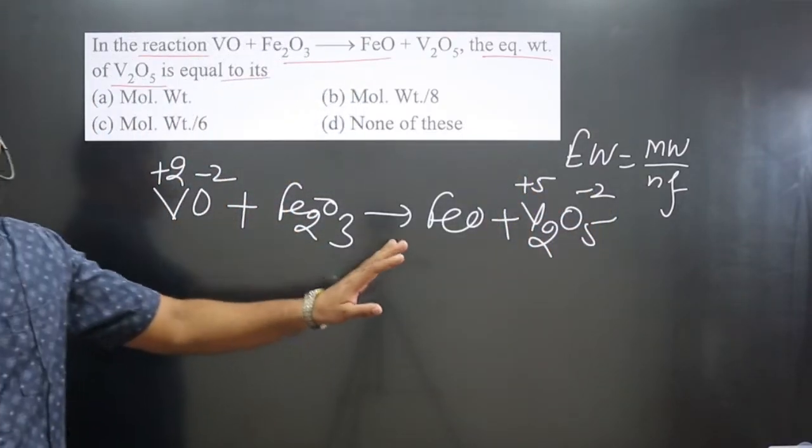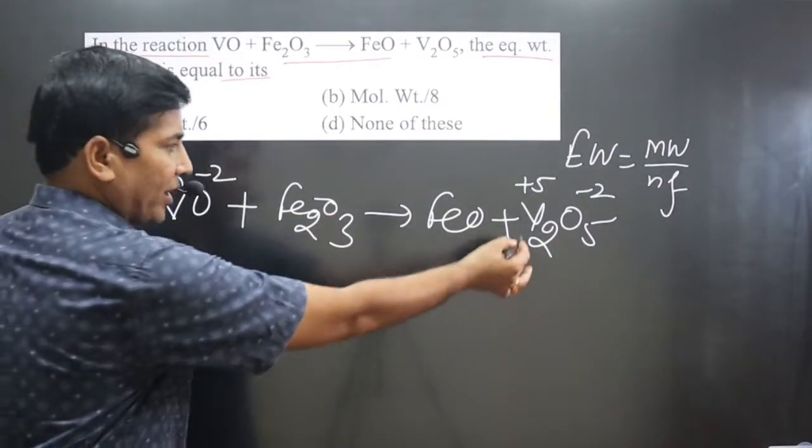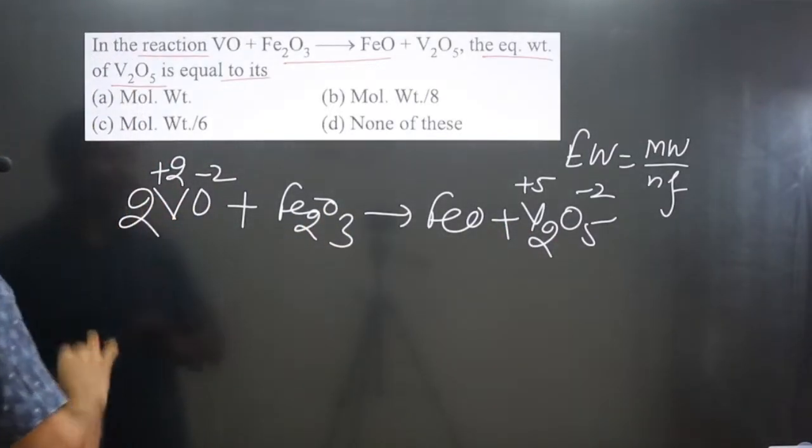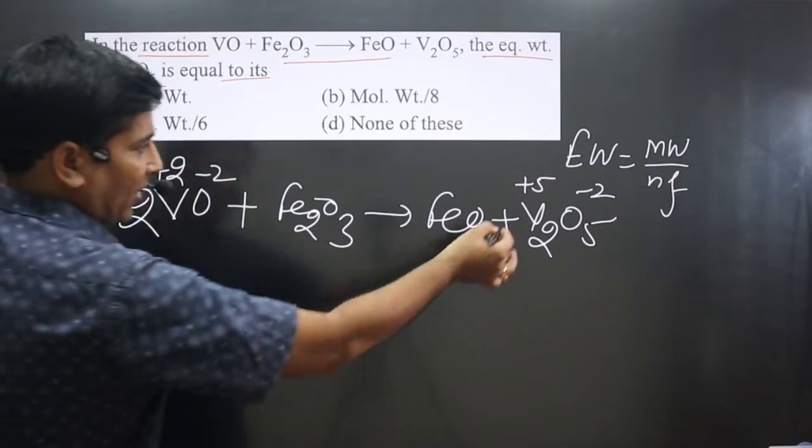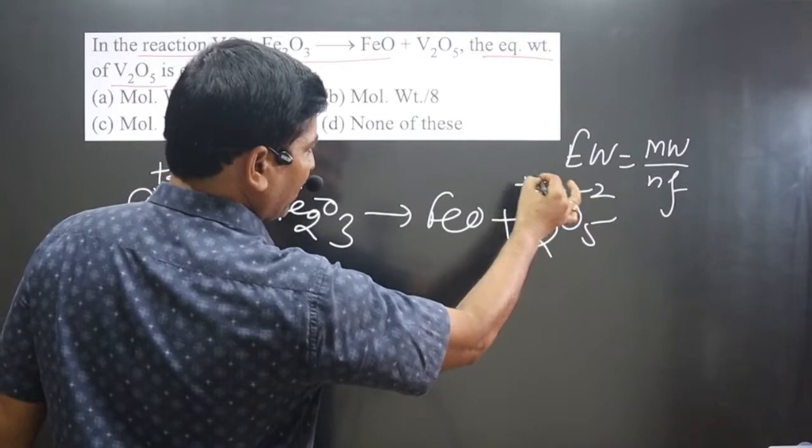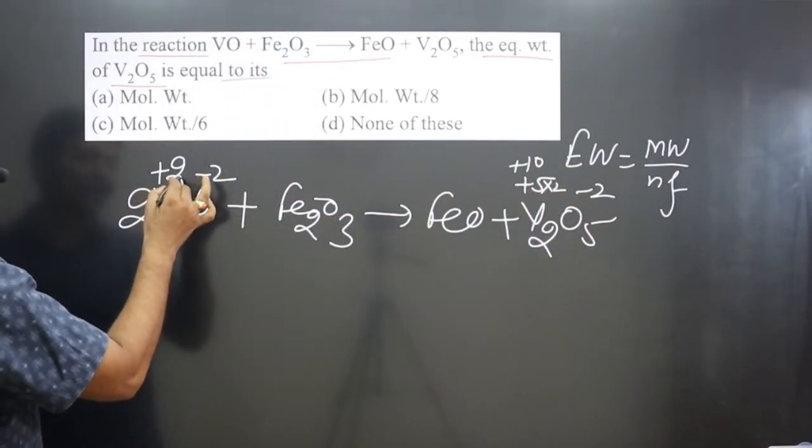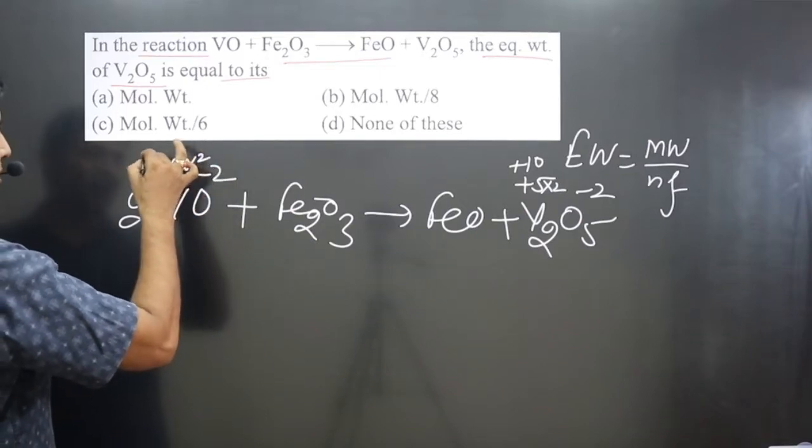Now before balancing the charge, always balance the number of atoms. Two vanadium on one side, only one on the other, so multiply by two. Now balance the charge. One vanadium is plus five, and two vanadium multiplied by two is present in plus ten. Other side, one V is plus two, and two will be present in plus four.